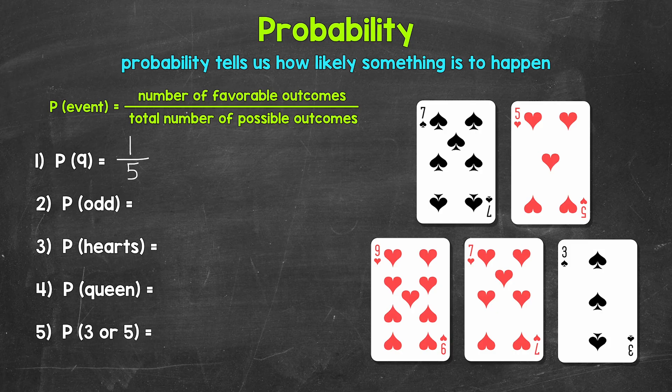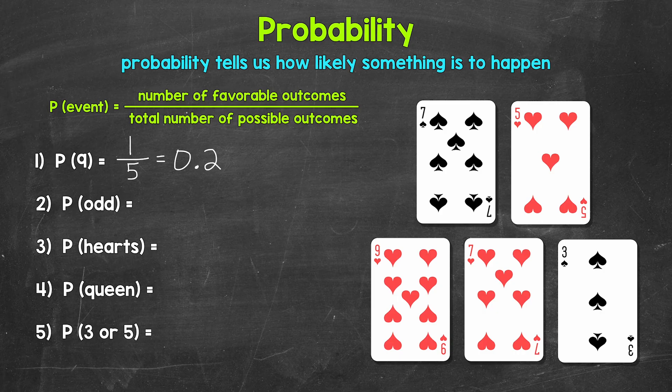We have a one out of five chance of picking a nine. Now let's write that as a decimal and a percent. One fifth as a decimal equals 0.2, two tenths. Remember, divide the numerator by the denominator to go from a fraction to a decimal. Then we can get our percent by multiplying the decimal by 100 — a quick way to do that is to move the decimal twice to the right. So our percent here is 20%. This is the probability of picking a nine.